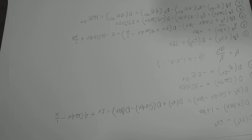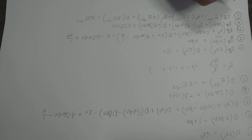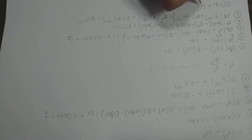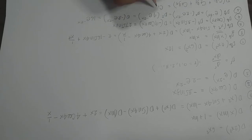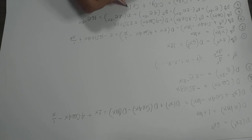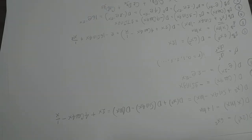Differential operators are linear operators. If D represents a differential operator, y₁, y₂, y₃ are functions of x, and c₁, c₂, c₃ are constants, then D(c₁y₁ + c₂y₂ + c₃y₃) = c₁D(y₁) + c₂D(y₂) + c₃D(y₃). The operator is distributive.